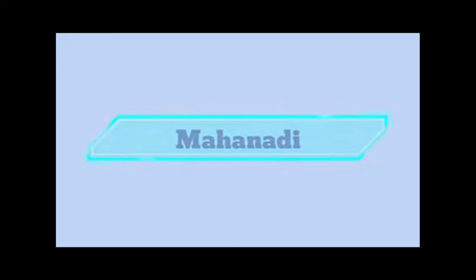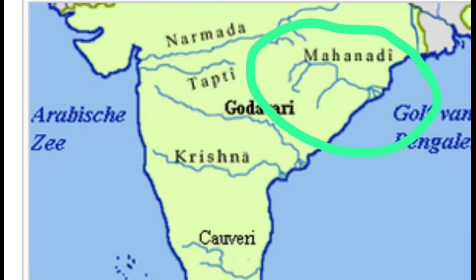The Mahanadi Basin — the Mahanadi River originates in the Chhattisgarh Highlands. It flows through Odisha to reach the Bay of Bengal. Its length is about 860 km.